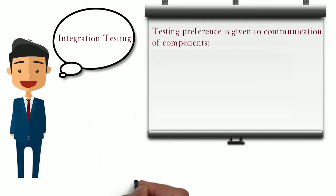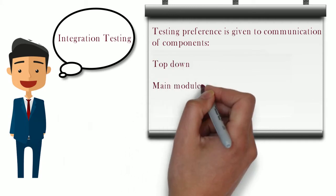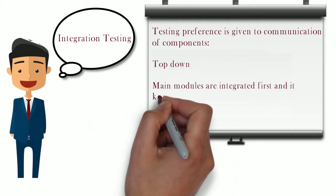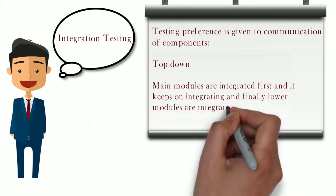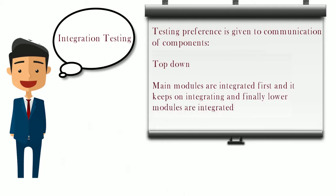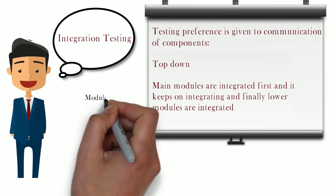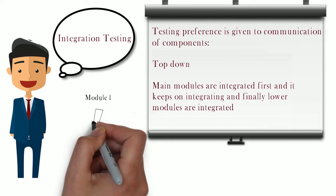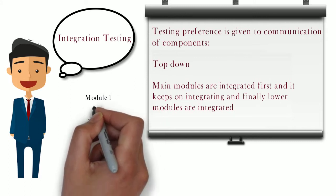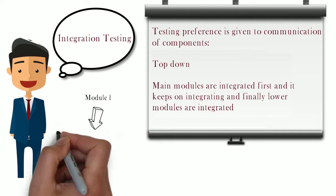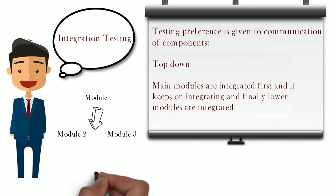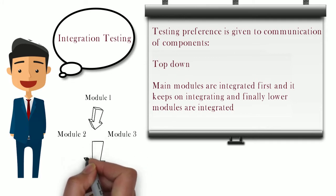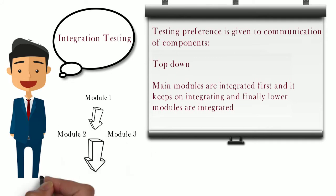The next approach is top-down, where integration starts from the top layer and keeps integrating until the last layer is completed. In our example, the look and feel of the product would be made available to the customer first, so they can search and identify products. Later, other components like placing the order or cancellation or modification would be integrated with this UI layer.